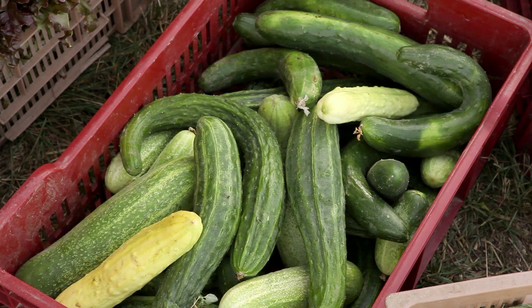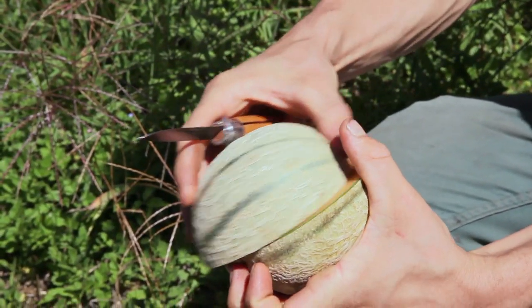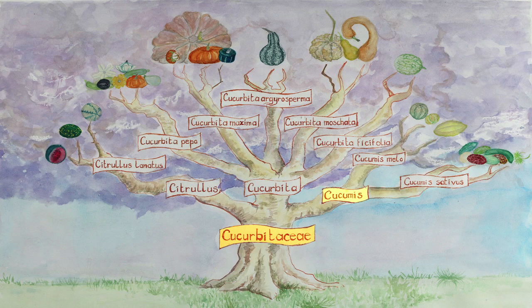For example, the cucumber is a member of the Cucurbitaceae family, the Cucumis genus and the Cucumis sativus species, divided into many varieties. The melon also belongs to the Cucurbitaceae family and the same Cucumis genus, but it is from a different species, which is also subdivided into many varieties.